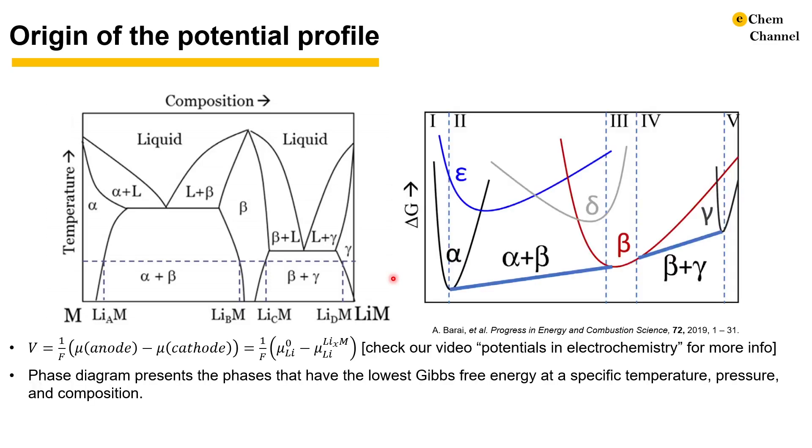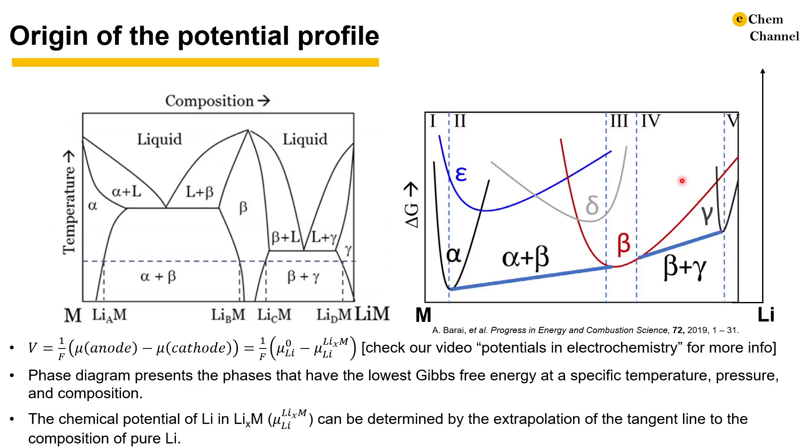This chemical potential information can be obtained from the Gibbs free energy curves shown on the right. A phase diagram presents the phases with the lowest Gibbs free energy at a specific temperature, pressure, and composition. In regions 1, 3, and 5, we have the lowest energy determined by the Gibbs free energy curves of phase alpha, beta, and gamma. In regions 2 and 4, the lowest energy is determined by the tangent lines between the Gibbs free energy curves of phases alpha, beta, and gamma. In these regions, two phases coexist. The chemical potential of lithium in the various phases can be determined by drawing the tangent line of the Gibbs free energy curves and calculating the intercepts as the composition of pure lithium.